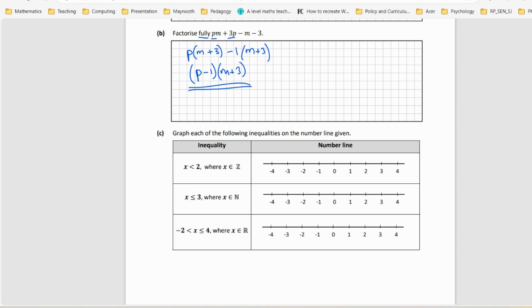Some inequalities: graph each of the following inequalities on the line given. So x is less than 2, where x is in Z, which is integers. So that's whole numbers, which can be positive and negative. It's less than 2, so this one is open and the rest are filled in. It's not less than or equal to, so it can be 1, it can be 0, it can be minus 1, minus 2, minus 3, minus 4, etc. I can keep going, but that's all I can show here.